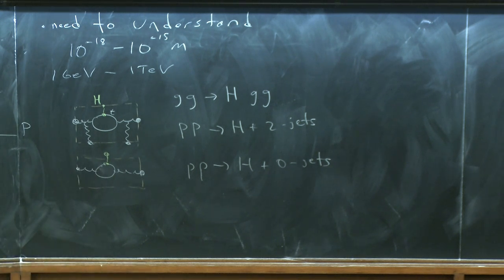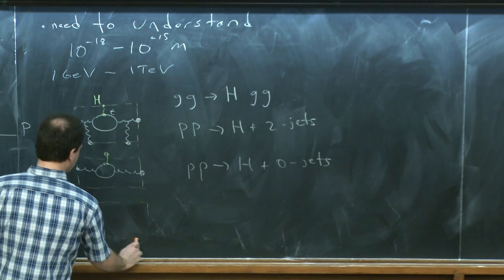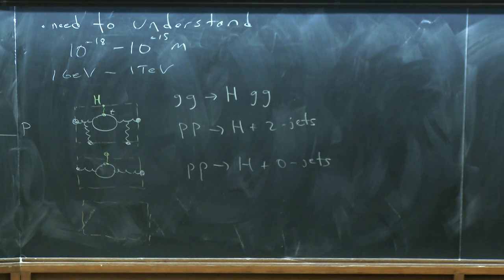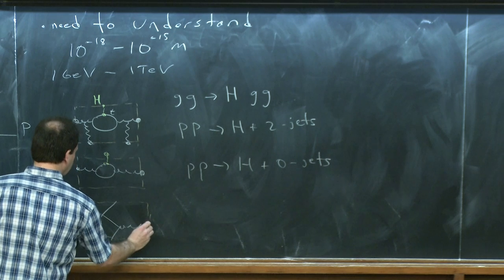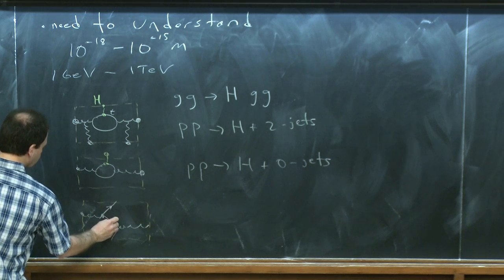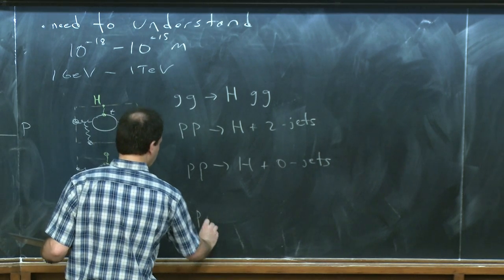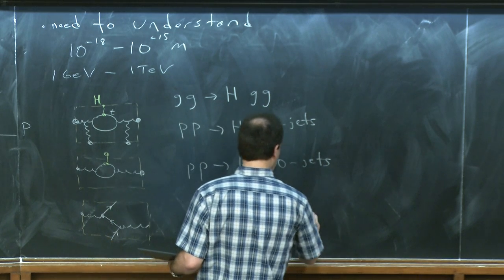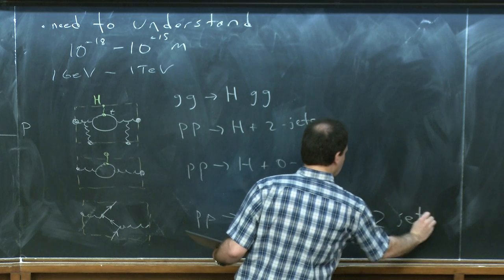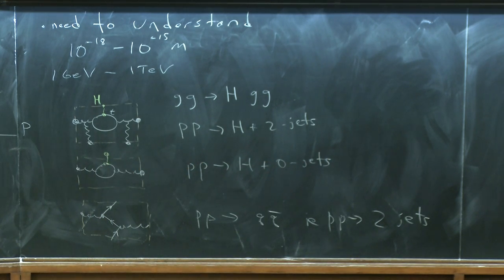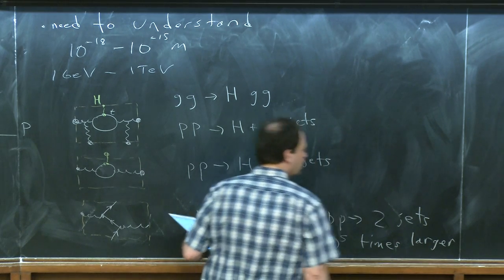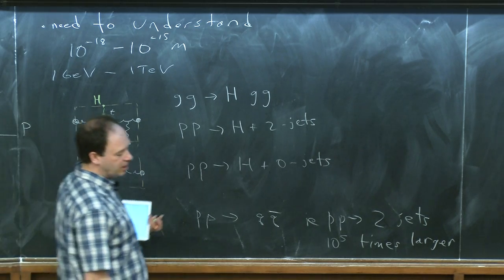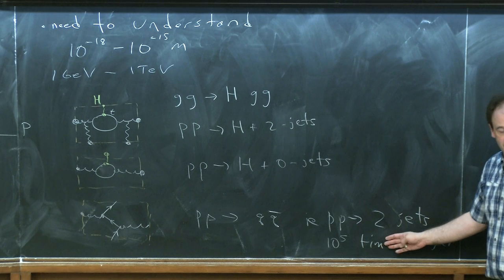Producing a Higgs boson is much less likely than not producing one, because QCD is strongly interacting. Another possibility is to just have gluons produce two quark jets through a simple Feynman diagram — a quark and antiquark — so PP goes to QQ-bar, i.e., PP goes to two jets. This is about 10 to the 5 times more likely than the Higgs boson process; the cross-section is about 10 to the 5 times larger. Part of the game of searching for the Higgs boson is understanding these jet backgrounds that are much more common.